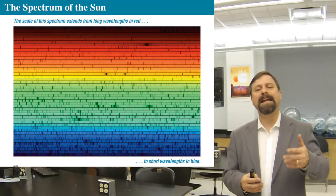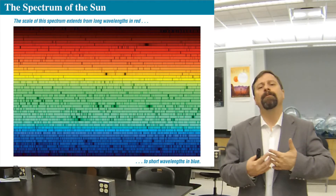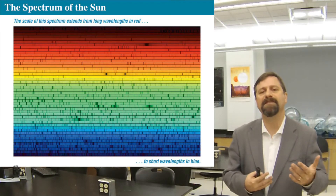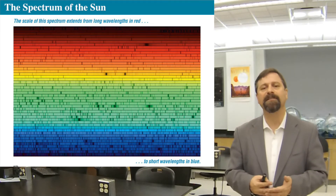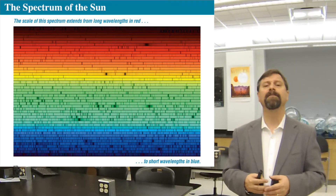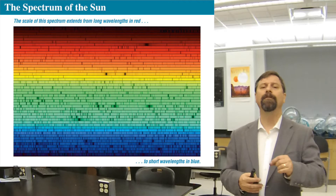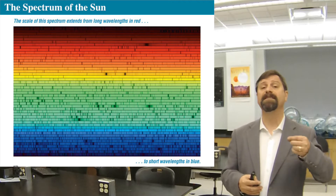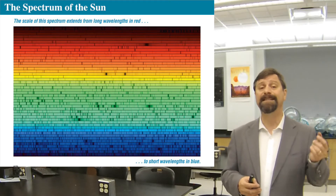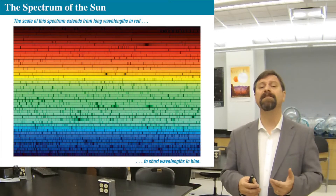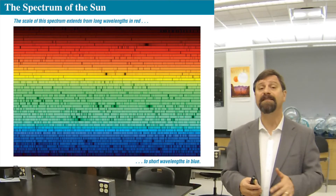What we see is a series of dark lines on the spectrum, and those are places where the light is simply dimmer than the surrounding continuum.